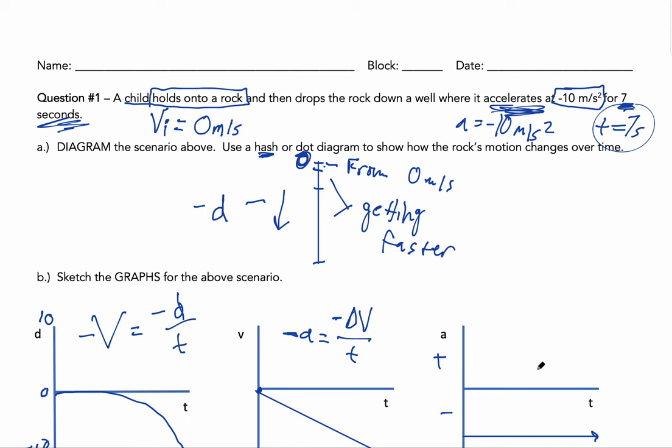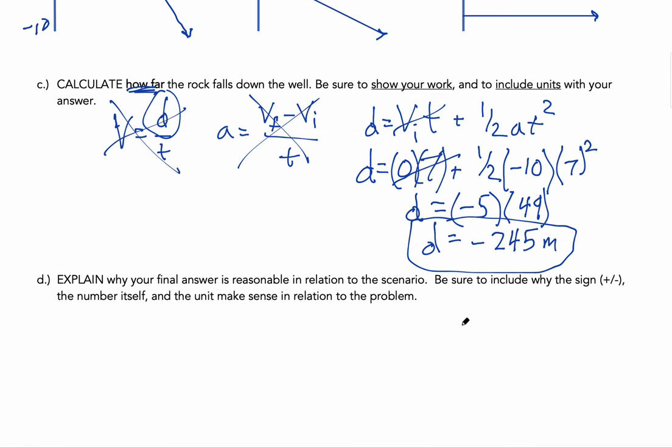The rock fell 245 meters in the downwards direction, which makes sense for an object falling for seven seconds — things fall quickly, so that's a lot of displacement covered. The negative sign makes sense because we're falling downwards. The unit meters is appropriate for distance, not meters per second or seconds. Overall, 245 meters is a reasonable answer for an object in free fall for seven seconds. Hopefully you found that useful — good luck in your studies.